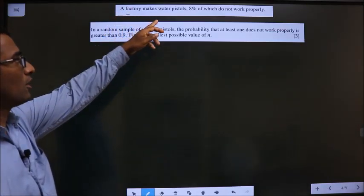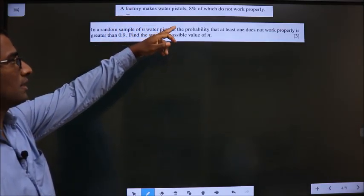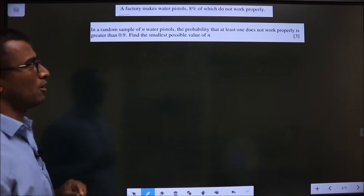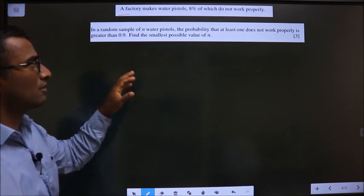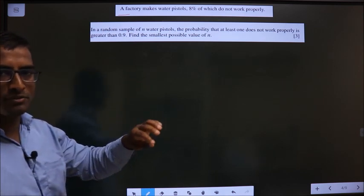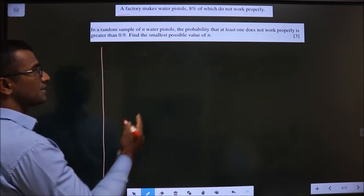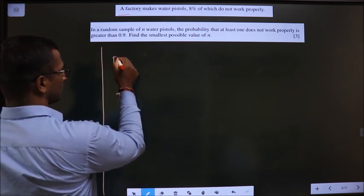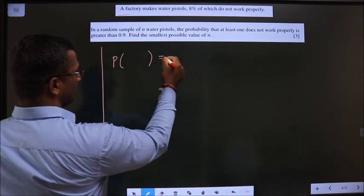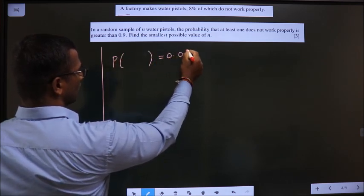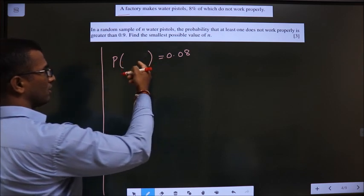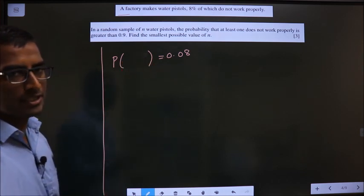A factory makes water pistols, 8% of which do not work properly. So convert the given statement into useful information in this way. 8% is nothing but probability. 8% means 0.08. So probability of do not work properly is 0.08.